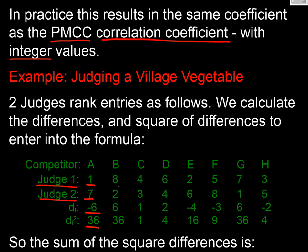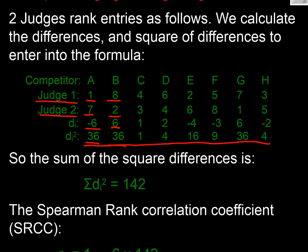We do exactly the same thing. Judge one rated B as eighth and the second judge said second, so the difference is six, and again squared that's 36. And we carry on through until we get all these values. These are all the differences.